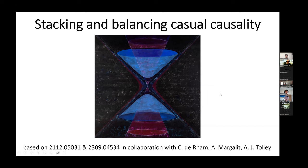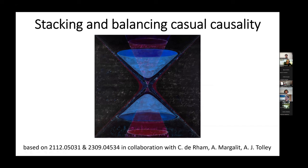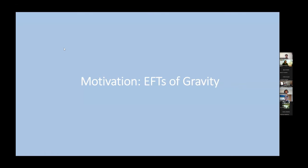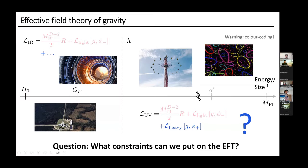This is based on work I did with my supervisors, Andrew Tolly, and a collaborator, in these two papers. Roughly what I want to talk about is how we can find consistency conditions from causality on low-energy effective field theories of gravity. Let me briefly motivate the background. I think we can all agree that GR is a reasonably effective theory — we've tested it to reasonable precision — but we know that above a certain cutoff lambda, we expect a different theory.